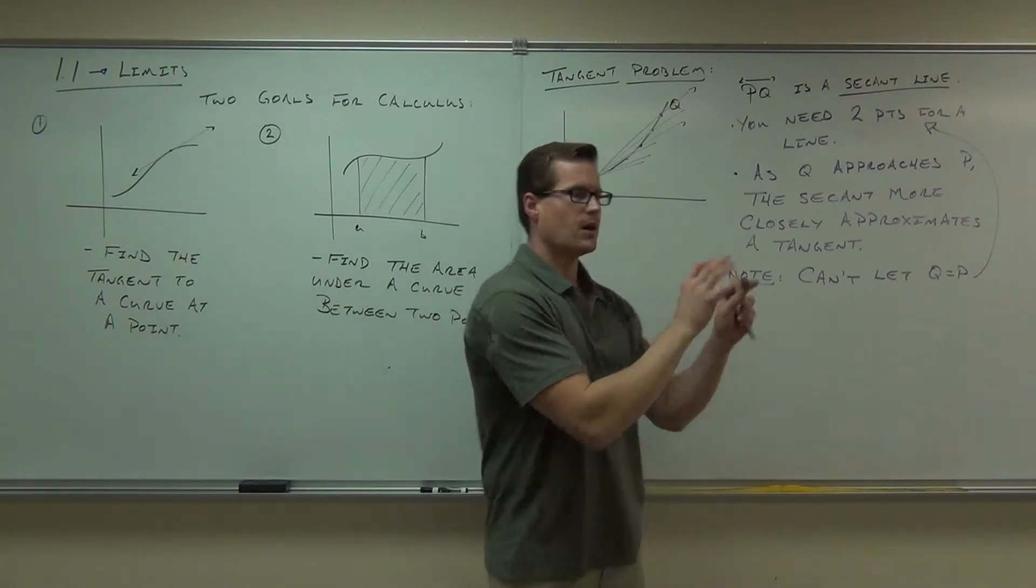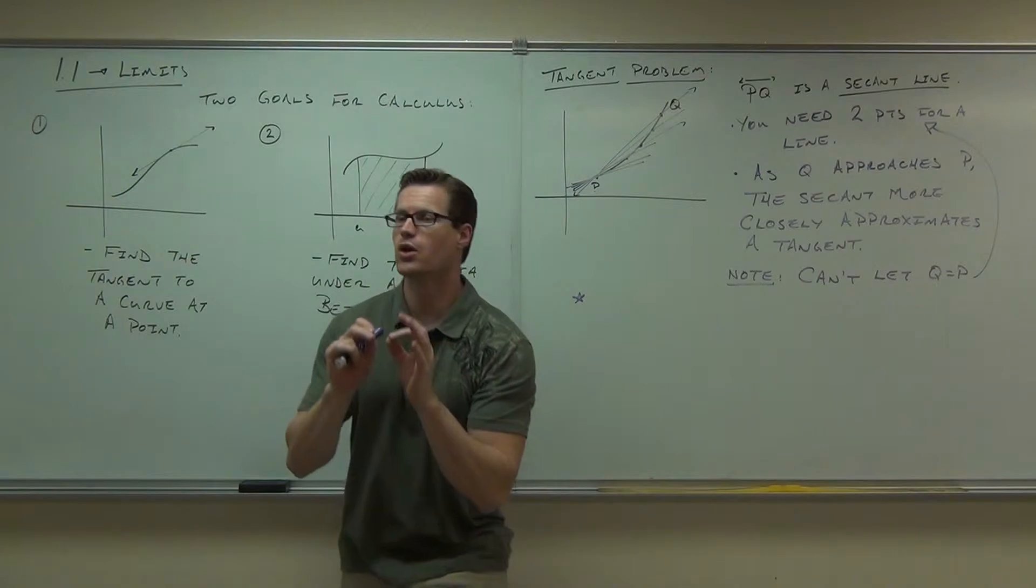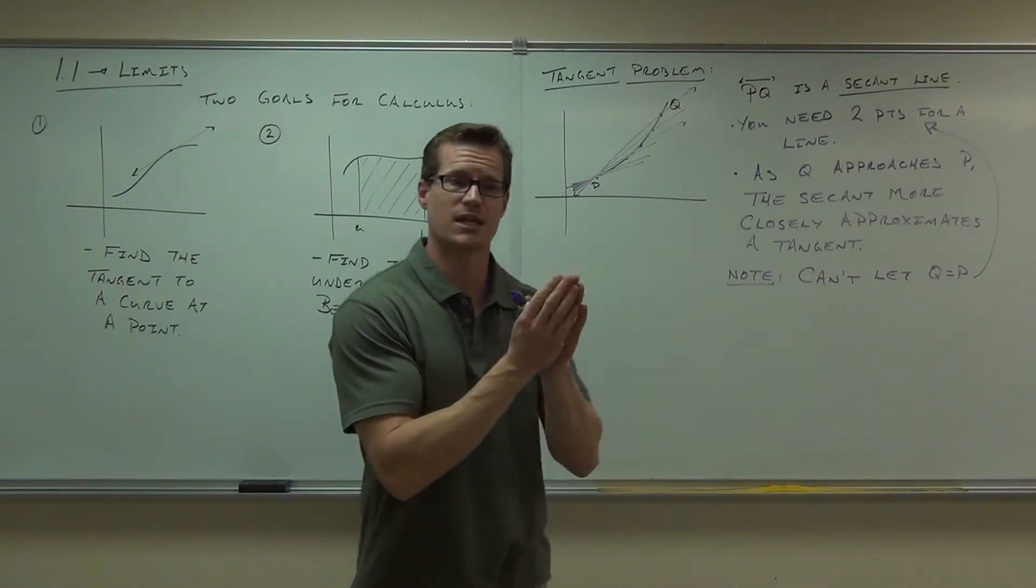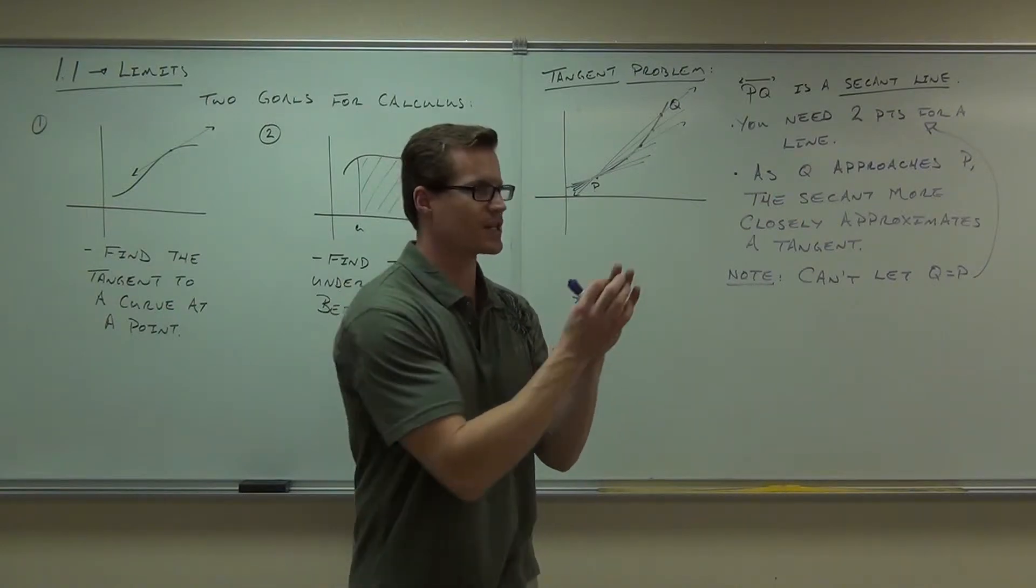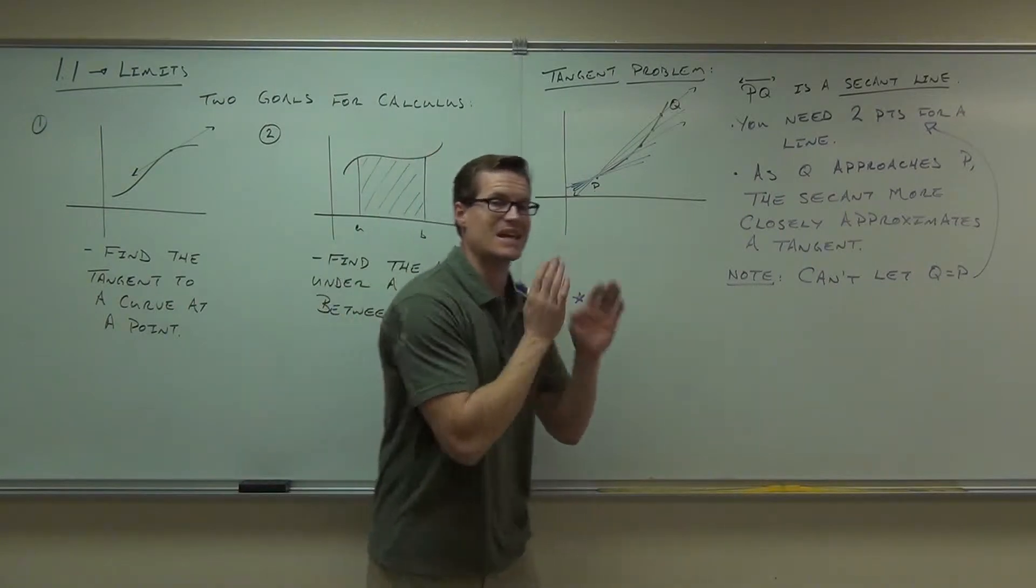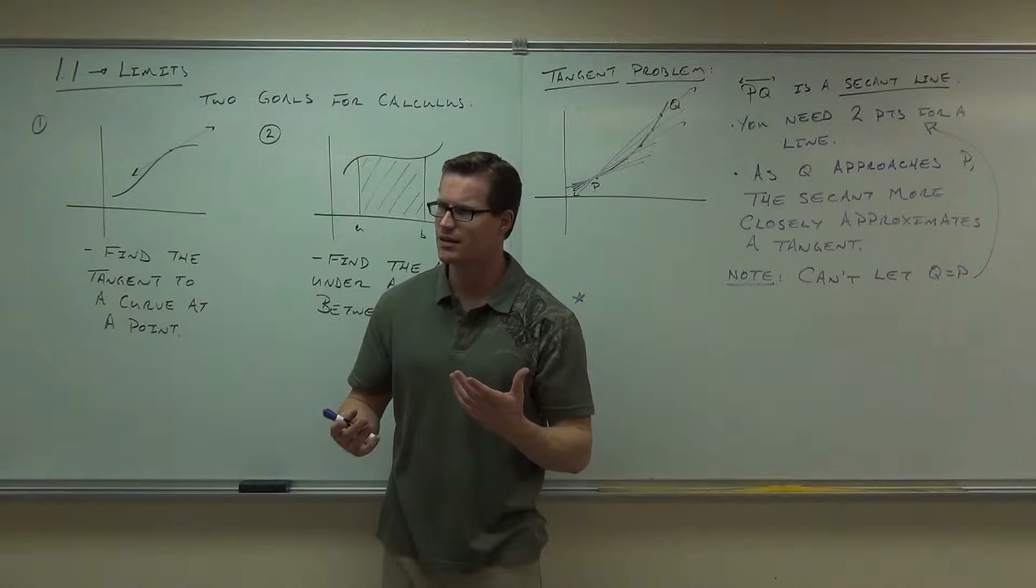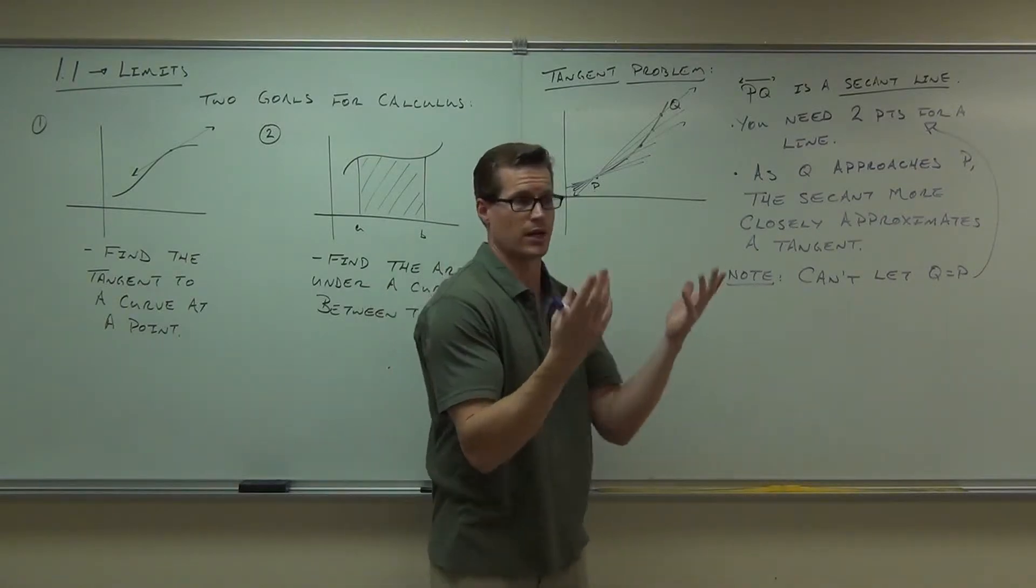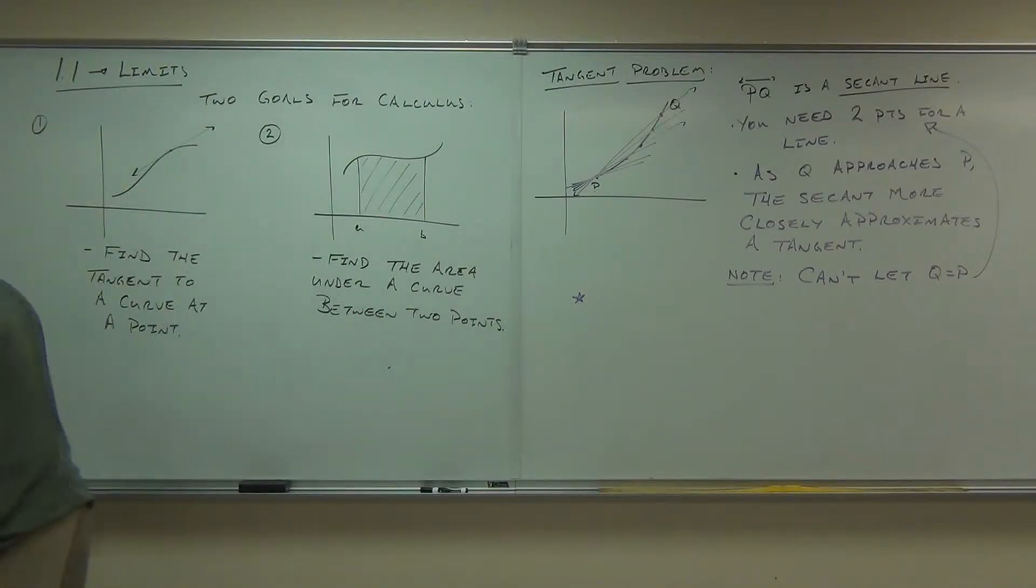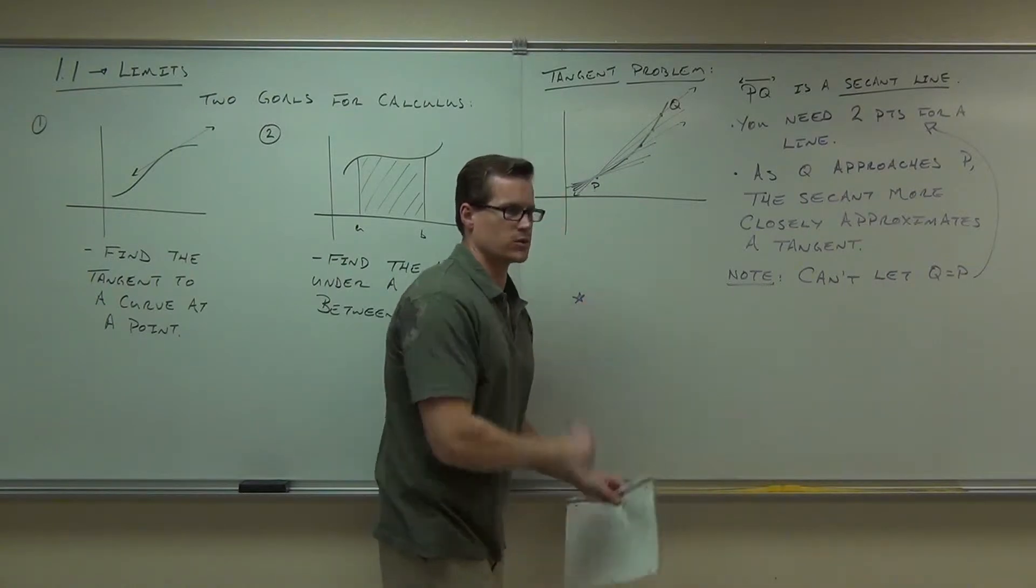So here's the idea behind calculus. It says we can get Q so close to P that there's literally no difference between the secant and the tangent. We can get it so close, we can't let it equal, but we can get it so close that the secant line is the same as the tangent line. That's the idea of a limit. If we let Q get really, really, really close to P, the secant will be identical to a tangent.